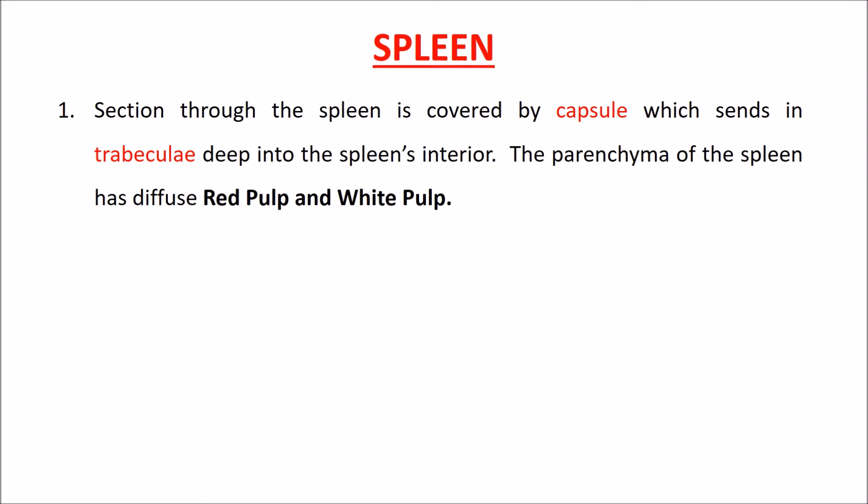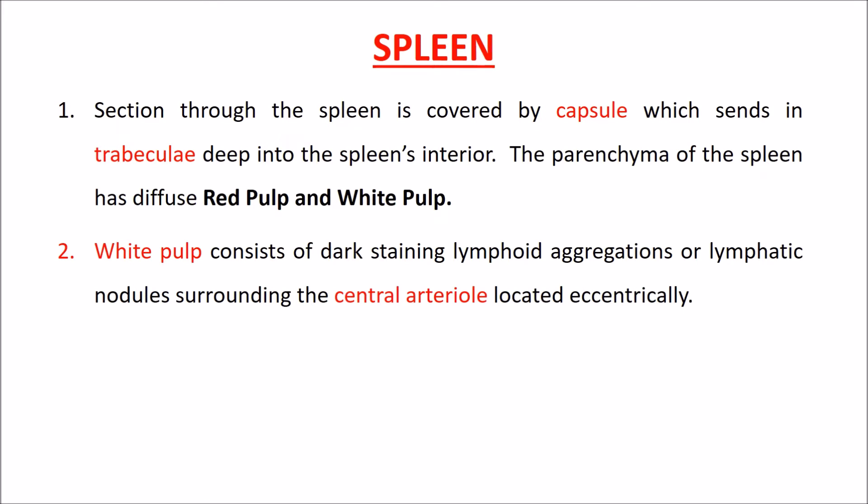The parenchyma of the spleen has diffuse red pulp and white pulp. White pulp consists of dark-staining lymphoid aggregations or lymphatic nodules surrounding the central arteriole, which is located eccentrically.